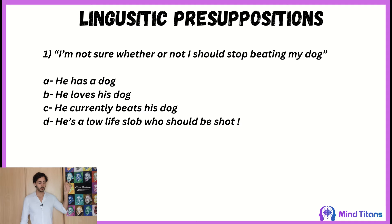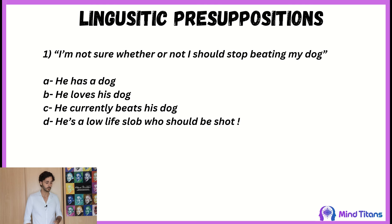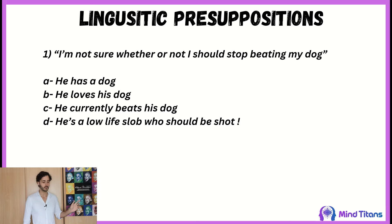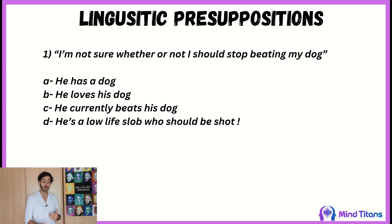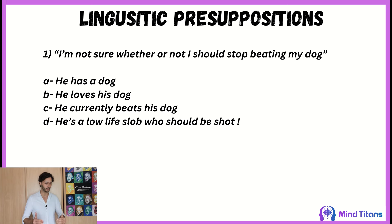One of the easiest exercises we used to give was: can you read this phrase? For example, 'I am not sure whether or not I should stop beating my dog.' You have a series of choices — which one is a presupposition and which one is an interpretation? The presupposition here is: he has a dog. Semantically and linguistically, that is definitely contained in the phrase because of 'my dog,' so the presupposition 'he has a dog' is verified.